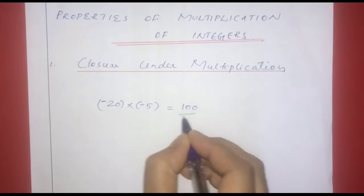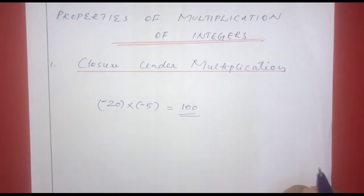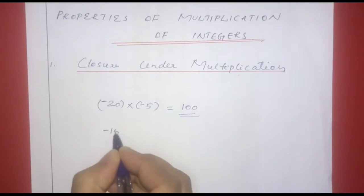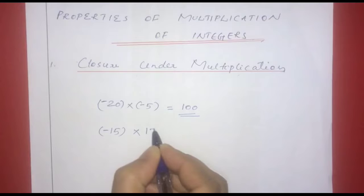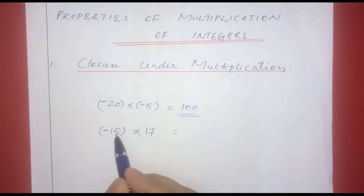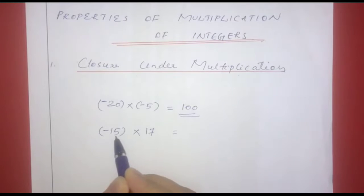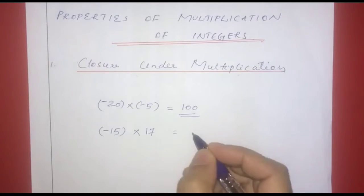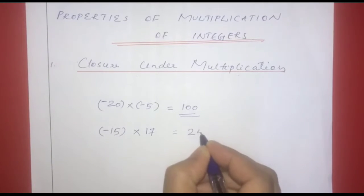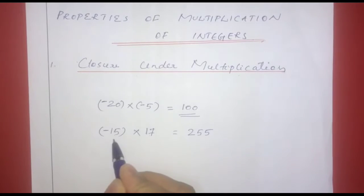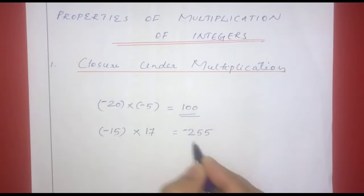When one number is negative and one is positive, we have to multiply the integers. For example, negative 15 into 17. One is negative and one is positive — there is an opposite sign — so the answer is negative.